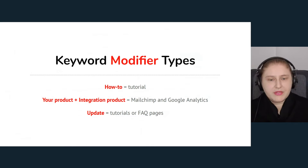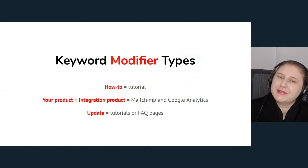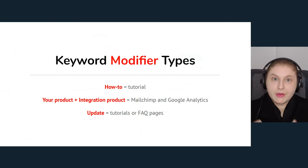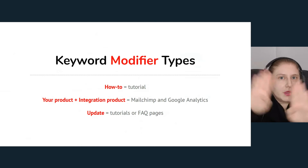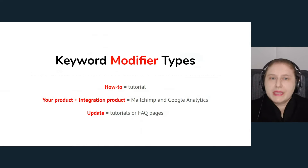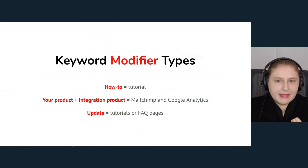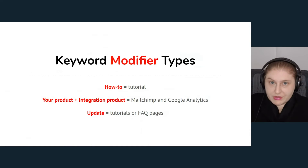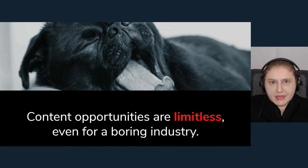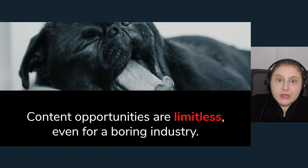There are also keyword modifiers. If you see "how to" in a keyword, you know it's a tutorial you need to produce. If you see your product plus an integration — like Google Analytics plus MailChimp — you know people are asking whether your solution plugs into what they already have. If you see anything regarding updates, it's either a tutorial on how to do the update or an FAQ page addressing common worries. Content opportunities are limitless, even for a boring industry — once you figure out what people want, it's easy to produce documentation that ranks well.